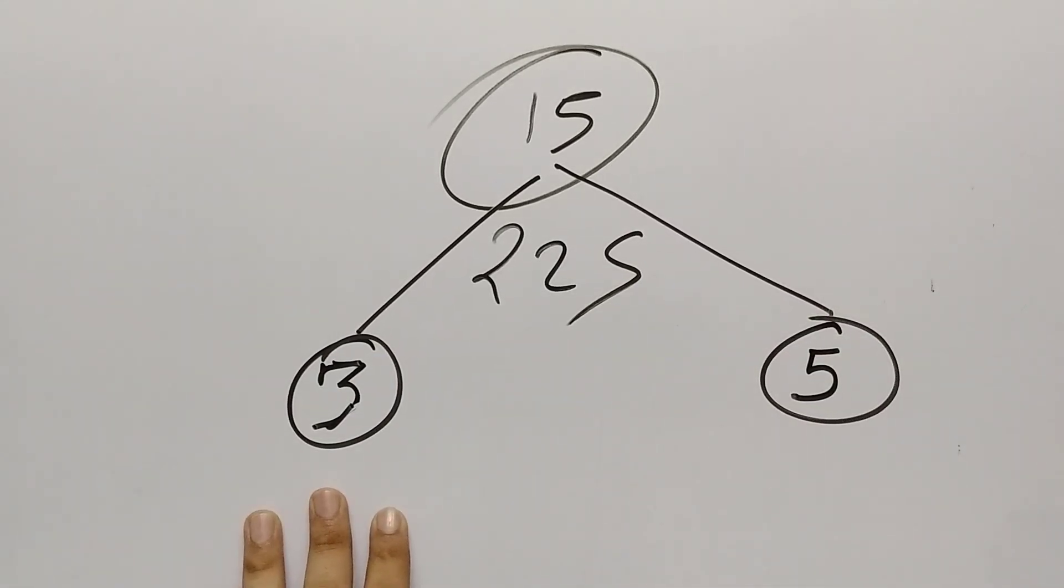Now we have to check divisibility by 3 and divisibility by 5. If both of these come, then we can say yes, this number is exactly divisible by 15.